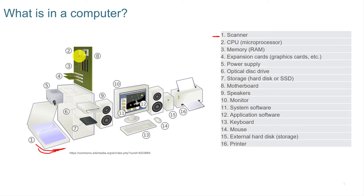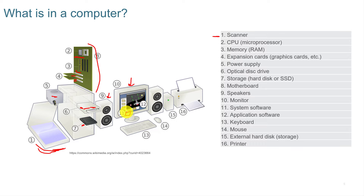You might have a central processing unit, memory or random access memory, expansion cards like a video card that could go onto the motherboard, power supplies, an optical disk drive — most newer computers are not coming with optical disk drives but some still have them — some type of storage device either a hard disk or an SSD, your motherboard which connects all of these components together, speakers or headphones, a monitor, and system software such as your operating system: Windows, Linux, or Mac. You could also have application software.